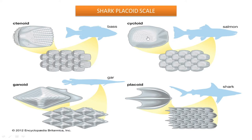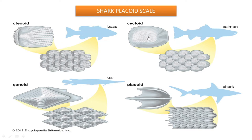Another type of scale is the cycloid scale. It is almost circular and rounded, having many concentric circles or rings all over its body. These circles indicate the age of the fish — if the fish is young, there will not be as many rings; the number of rings increases with the age of the fish.